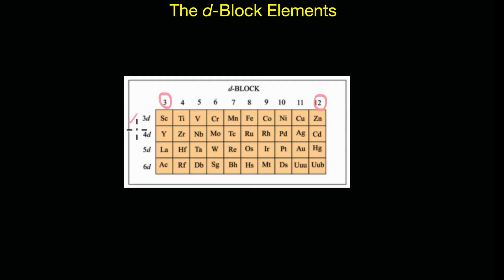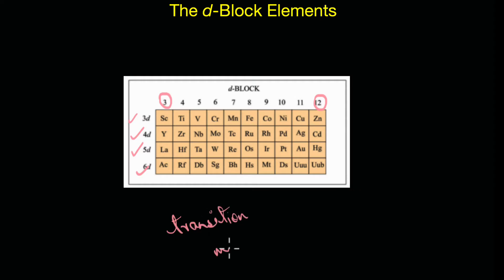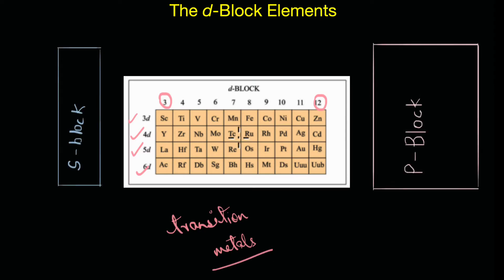These four series are formed by the filling of the 3d, 4d, 5d, and 6d subshells of electrons. These elements are also called transition metals because, firstly, they are all metals, and secondly, their properties are transitional between the highly reactive s-block elements that predominantly form ionic compounds and the p-block elements that predominantly form covalent compounds.